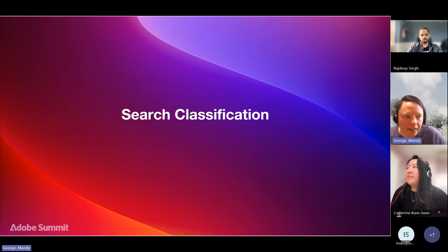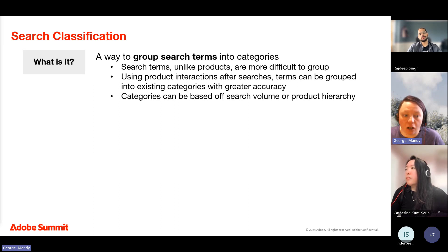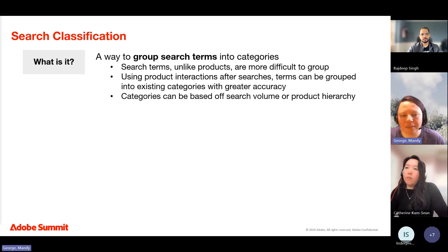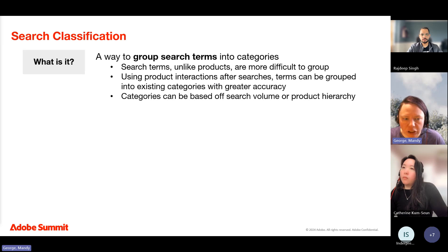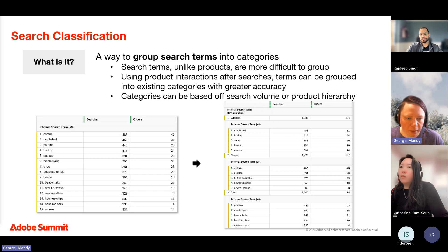Now that we have metrics to assess performance, let's look at how we can group search terms together. On any given day, your website can get hundreds or even thousands of unique search terms, and other than the top few with the highest traffic, assessing performance can be a gargantuan task. One way to handle this is by creating a classification to group search terms into meaningful categories — similar to how you'd classify products using department, class, or hierarchy.